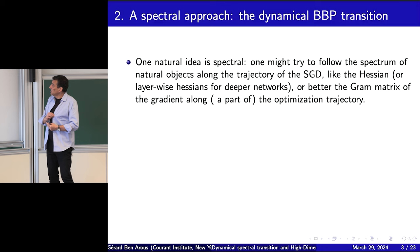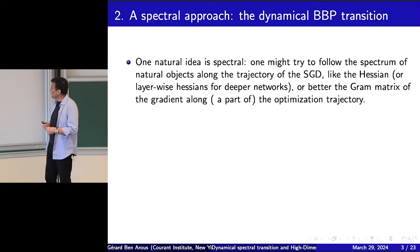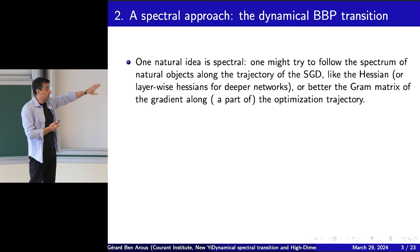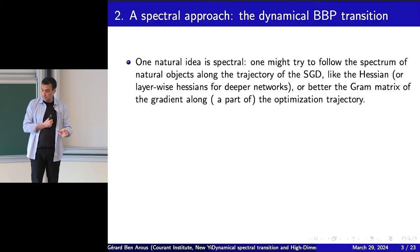Why don't you follow the spectrum of natural objects along the trajectory of the SGD? What are those natural objects? One of them is the Hessian of the function we are minimizing. When you have a deep network, the function is a composition of different functions given by the layers, so you could also look at the layer-wise Hessians.